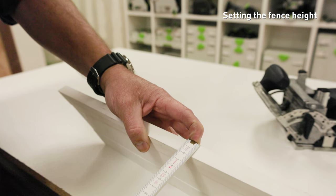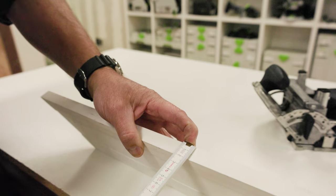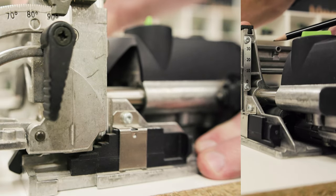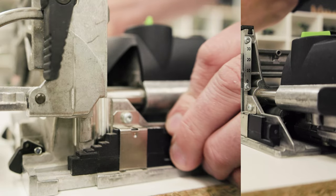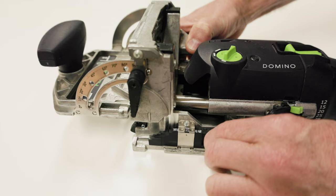The height of the fence needs to be set depending on the type of joint being made and the thickness of material being used. There are two options available for setting the fence height: the height gauge and the board thickness gauge.